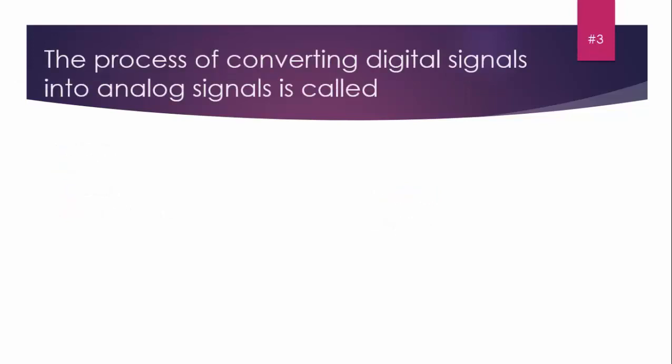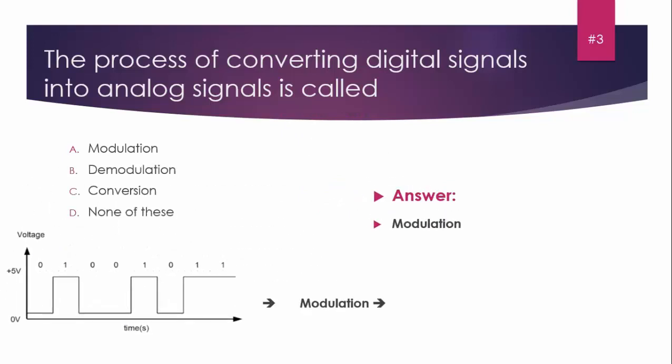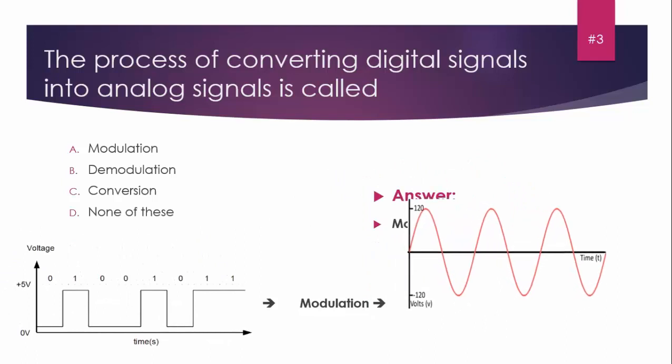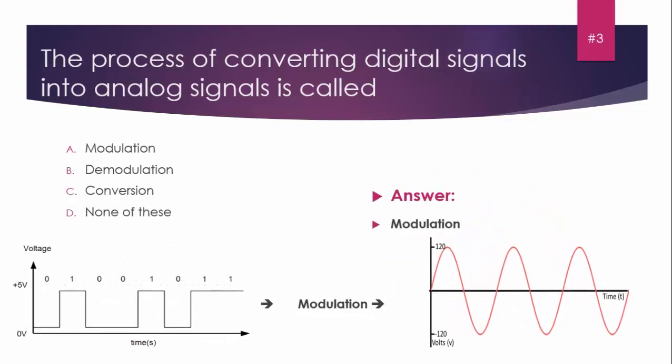MCQ number three: The process of converting digital signal into analog signal is called: A) Modulation, B) Demodulation, C) Conversion, D) None of these. The answer is Modulation, because modulation is the process of converting digital signal into analog signal.